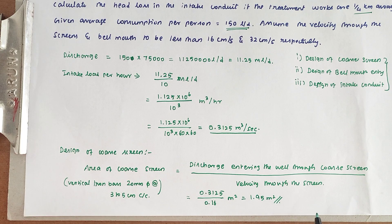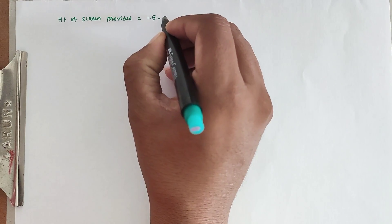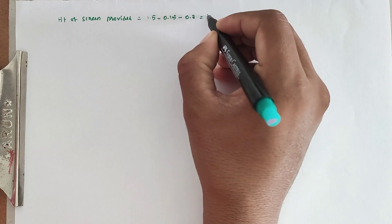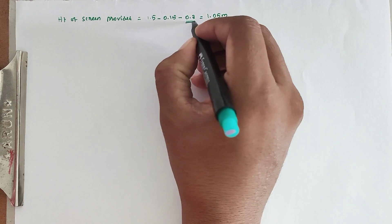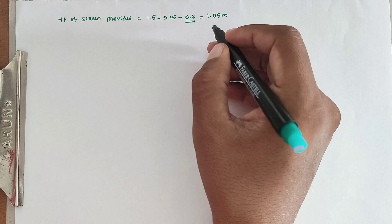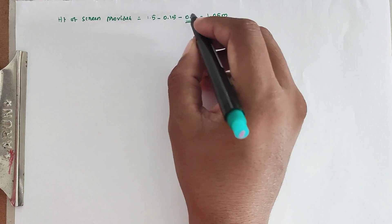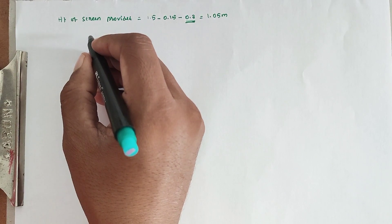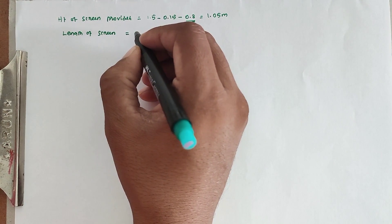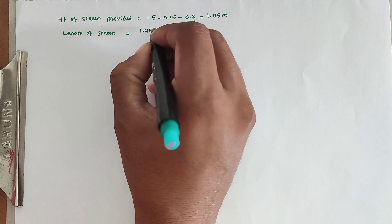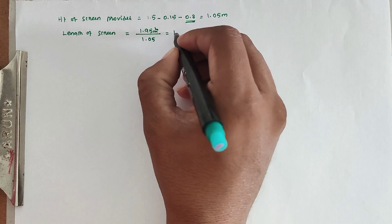Now we provide the height and length of the screen. Height of screen provided is 1.5 minus 0.15 minus 0.3, giving 1.05 meter. We assume the minimum water level of the canal is 0.3 meter below the FSL, keeping the top of the screen accordingly. Minimum length of screen equals area divided by height, which is 1.95 divided by 1.05, giving 1.86 meter.